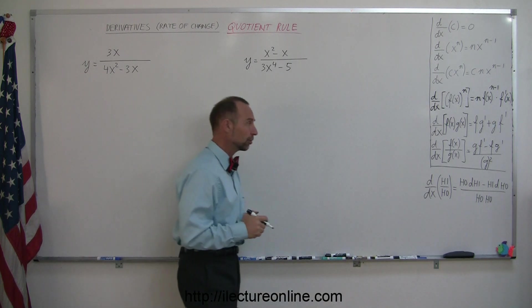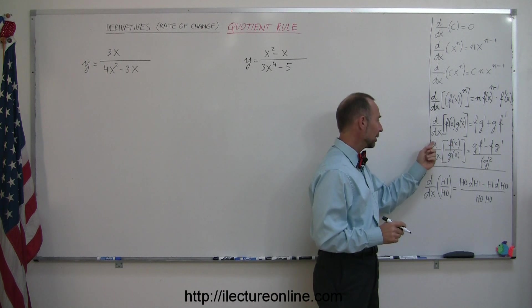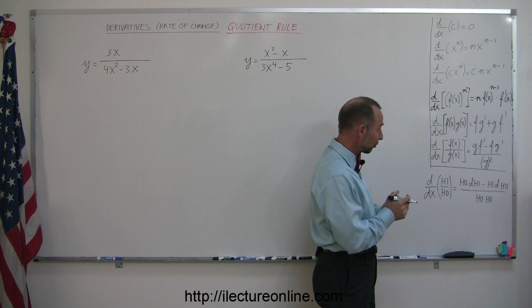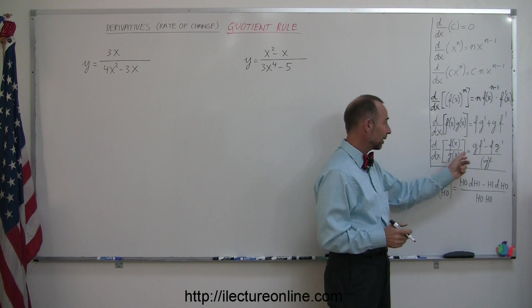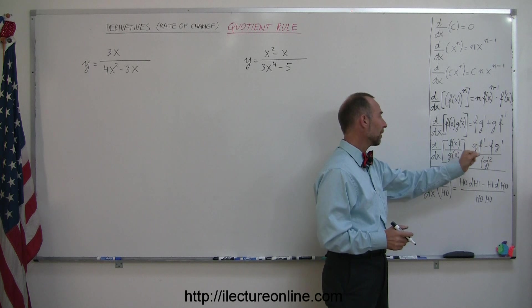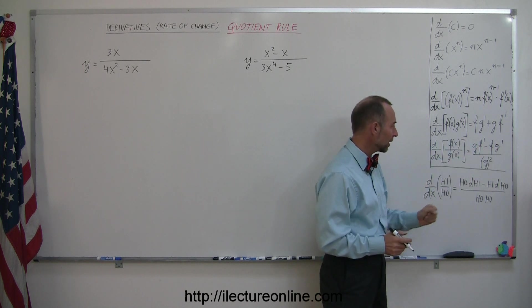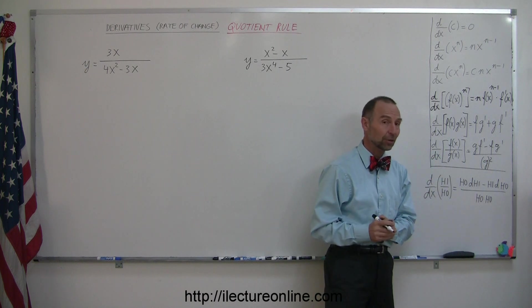The way the quotient rule works is that you have one function divided by another function and you want to take the derivative of that. The answer becomes the denominator g(x) times the derivative of the numerator f'(x) minus the numerator f times the derivative of the denominator, all divided over the denominator squared.